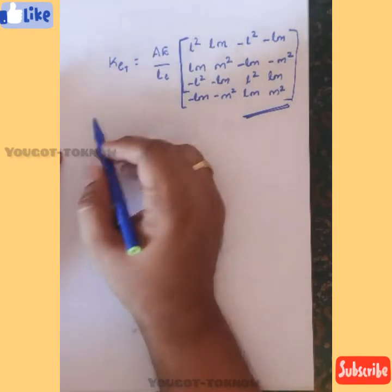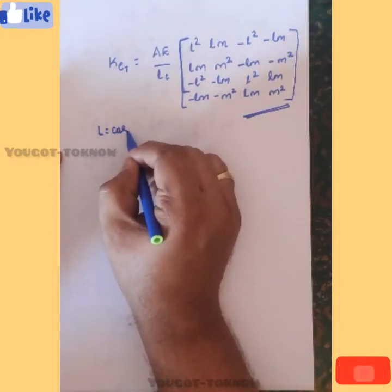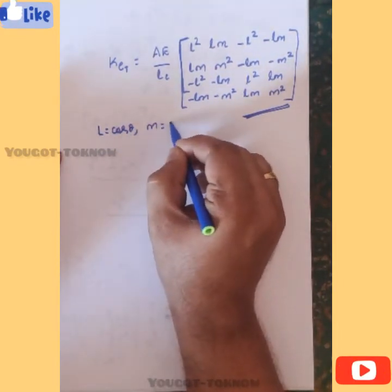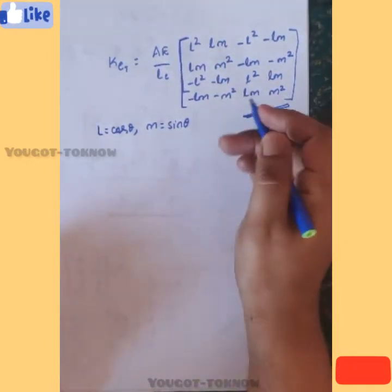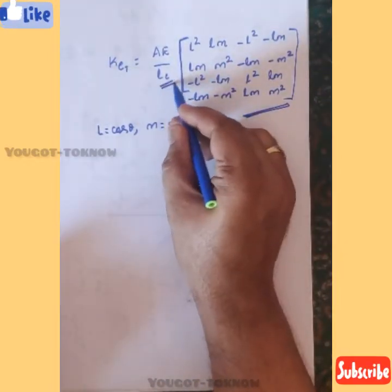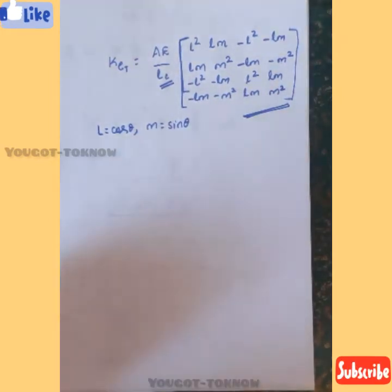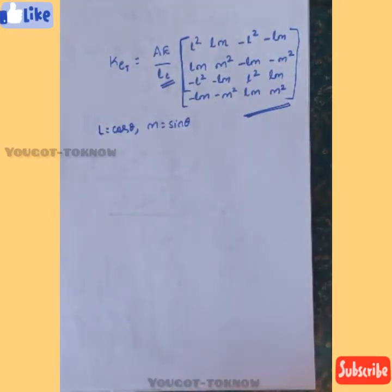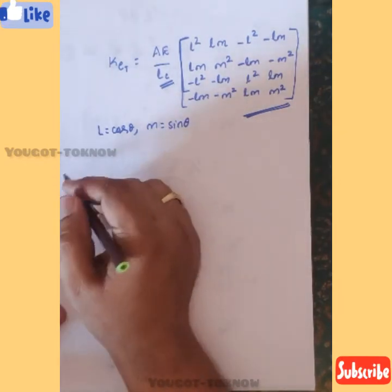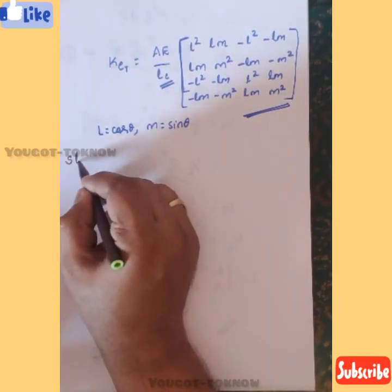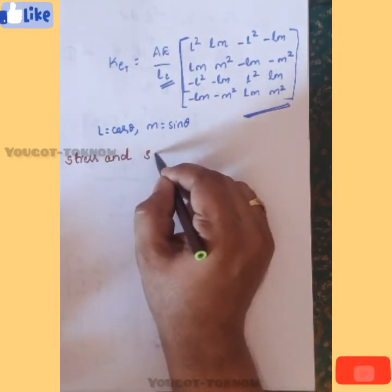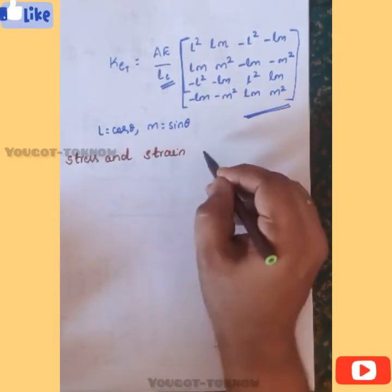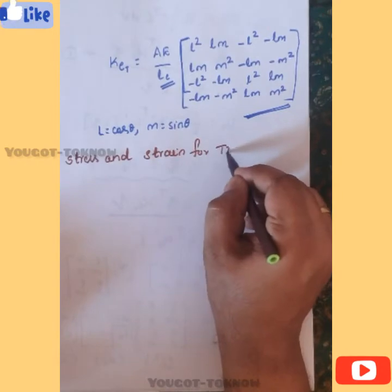Here, l equals cos(theta) and m equals sin(theta). The length of the element and how to determine l, m were already explained previously. This is how you determine the stiffness matrix for a truss element. Next, after the stiffness matrix, we need to determine the stress and strain for the truss element.